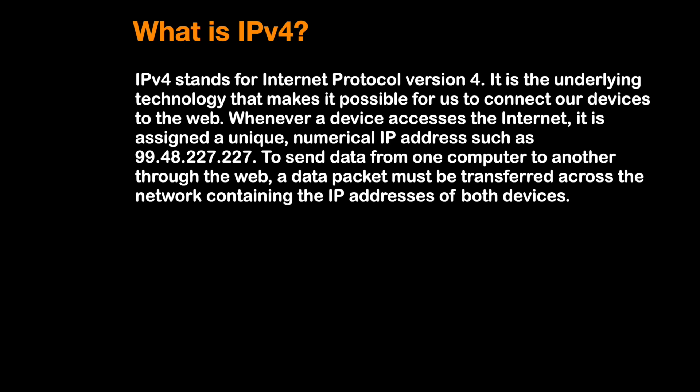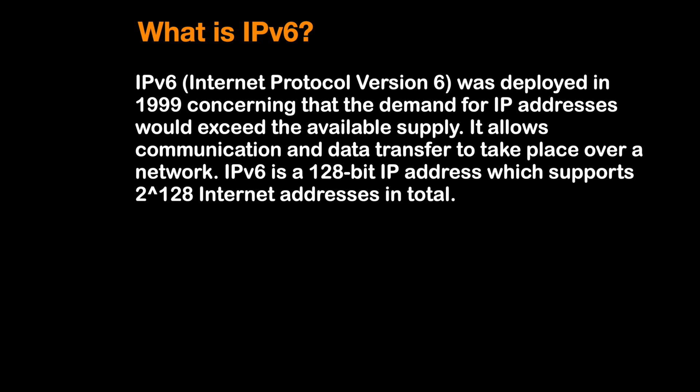IPv6 is known as Internet Protocol version 6 and was deployed in 1998, with the concern that demand for IP addresses would exceed the available supply. IPv4 is a 32-bit address system allowing a little more than 4 billion unique IP addresses — meaning 4 billion devices connected to the internet at the same time. Though we have some mechanisms to go beyond that number, it's not enough, so we invented IPv6. In IPv6 the address is 128 bits, which can support 2 to the power of 128 internet addresses in total — a massive number, almost close to infinity.